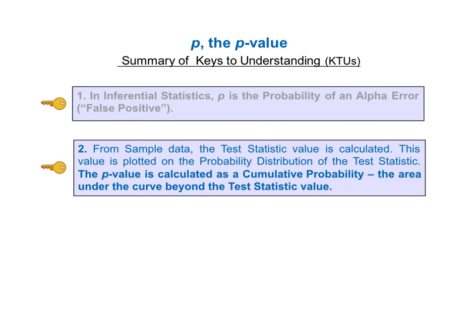The second KTU is: from sample data, the test statistic value is calculated. This value is plotted on the probability distribution of the test statistic. The value of P, the p-value, is calculated. The p-value is a cumulative probability — the area under the curve — beyond the test statistic value.